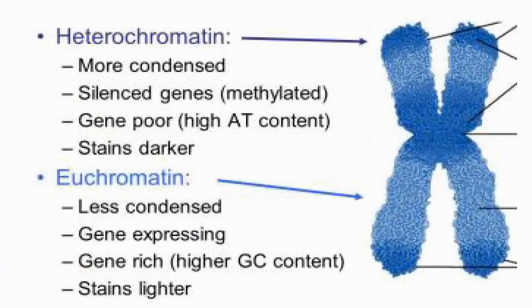This slide details the differences between euchromatin and heterochromatin on a live chromosome. Heterochromatin is more condensed, has silenced genes, and stains darker. On the other hand, euchromatin is less condensed, shows gene expression, and stains lighter. Heterochromatin has high adenine and thymine content leading to poor gene expression, while euchromatin has higher guanine and cytosine content leading to rich gene expression.